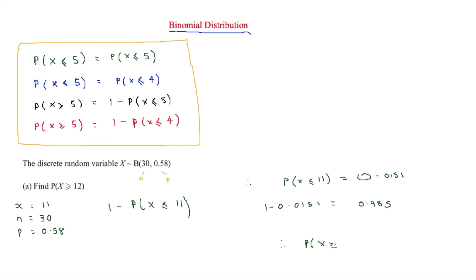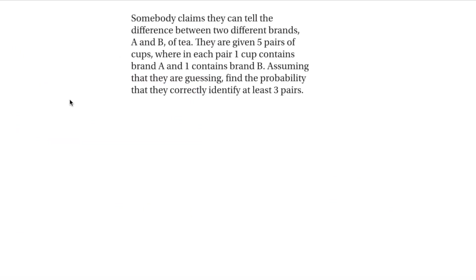Therefore, 1 minus 0.0151 equals 0.985, so the probability that X is more than or equal to 12 is 0.985.